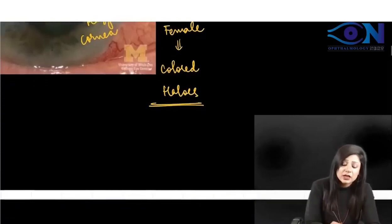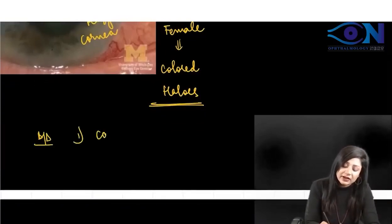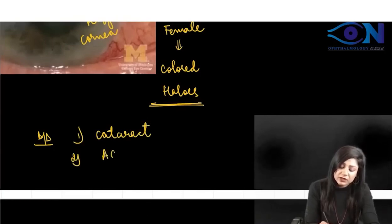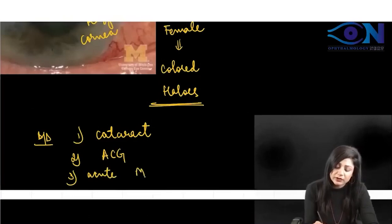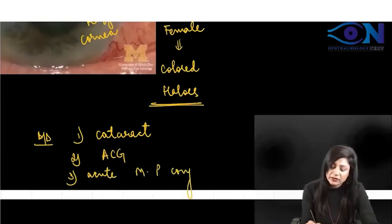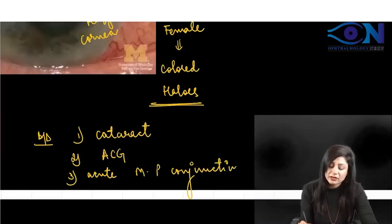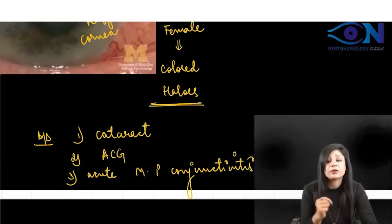The differential diagnosis for colored halos is important. One is cataract, second is acute congestive glaucoma, and third is acute mucopurulent conjunctivitis. Whenever you have colored halos in a question, always think about this differential diagnosis.